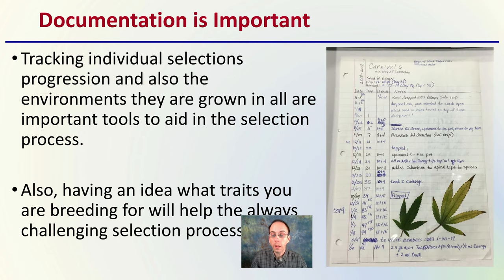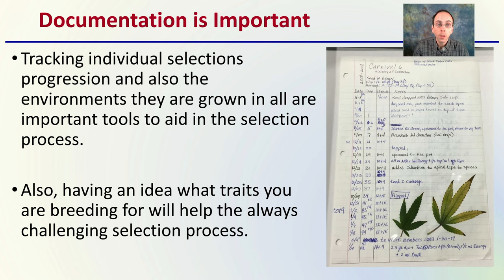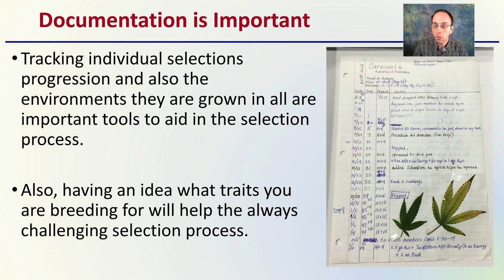With any form of growing, with any form of plant production, documentation is important. You want to be tracking individual selection progression and also the environments that they're grown in — all are important tools to aid in the selection process. Looking here, we have the date, the day, the drench-ups made in the notes, and some actual samples of leaves. Be sure to document the process because that will help you as a grower refine your techniques.